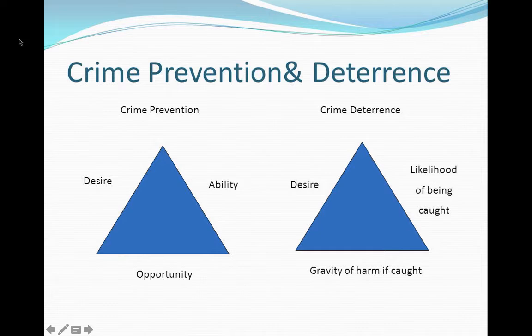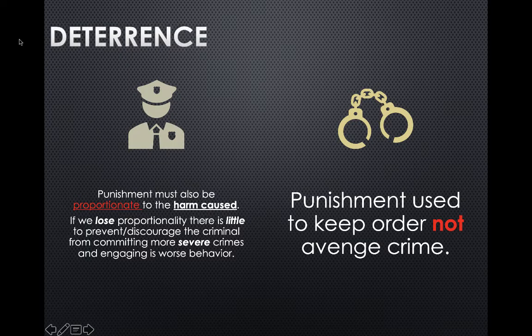The crime prevention triangle has three elements: desire, ability, and opportunity. The crime deterrence triangle has: desire, likelihood of being caught, and gravity of harm if caught. Deterrence also requires that punishment be proportionate to the harm caused. If we lose proportionality, there is little to prevent the criminal from committing more severe crimes. The punishment used to keep order is not to avenge the crime.